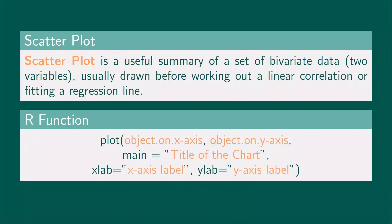Finally, let's create a scatterplot. A scatterplot is a useful summary of a set of bivariate data, which means two variables, usually drawn before working out a linear correlation or fitting a regression line. The code below allows us to generate a scatterplot in RStudio. Object on x-axis represents the variable to be placed on the x-axis, and Object on y-axis represents the variable to be placed on the y-axis. xlab allows us to set the label for the x-axis and ylab is for the y-axis.